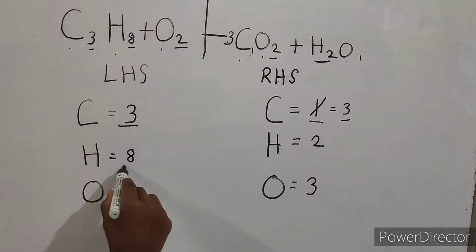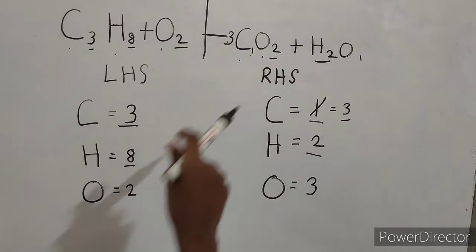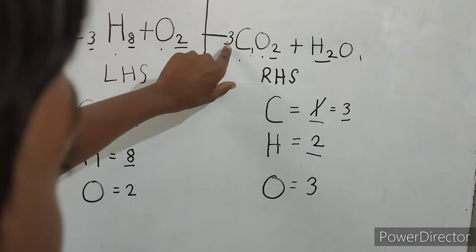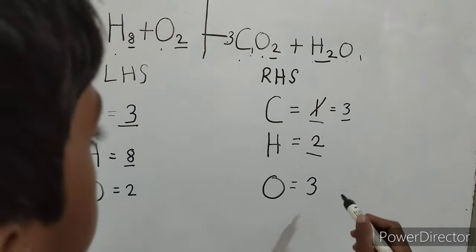Now let's balance hydrogen. Here we have 3 for carbon. So even oxygen is here. So this becomes 3 times 2 is 6.